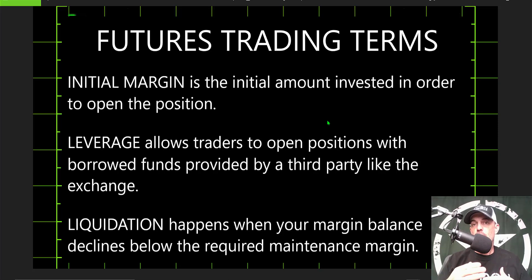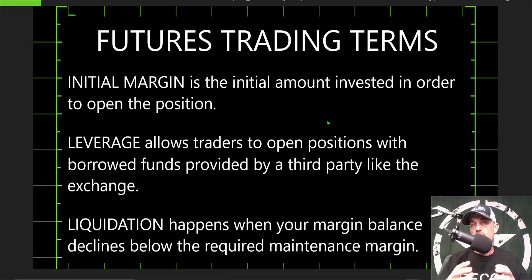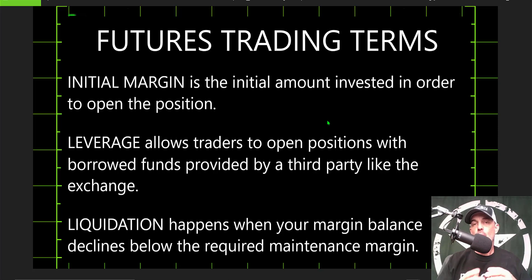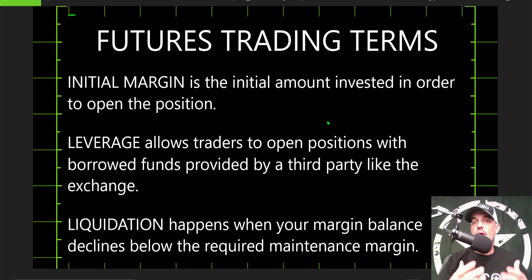By borrowing you're multiplying the size of the actual position you'll be trading. On the KuCoin futures grid bot the max is currently 5x — five times the amount of your initial margin. The term you certainly want to try to avoid is liquidation, which basically happens when your margin balance declines below the required maintenance margin. Once your balance goes below that amount your position will be liquidated and you will incur a loss.